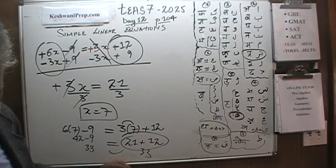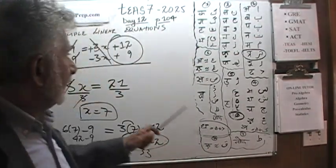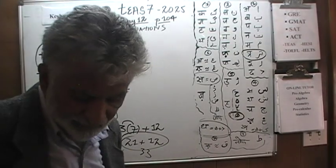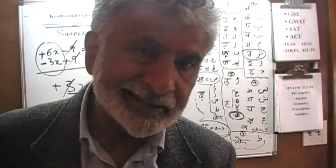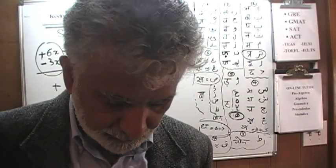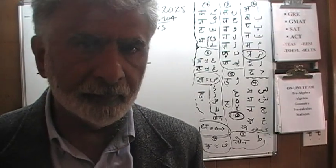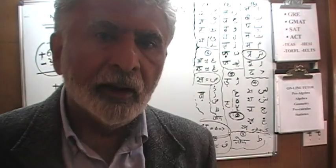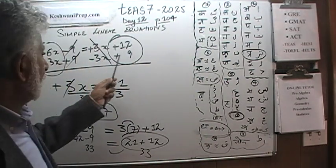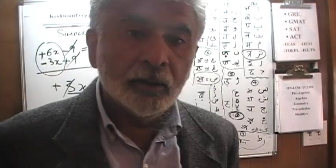That is the end of the topic: linear equations — simple linear equations. We did 5 yesterday and 5 today, and that's all you are going to see in the exam. The linear equations they ask us to solve are very straightforward and simple. Just bring all unknown quantities to the left-hand side and all known quantities to the right-hand side, and you are done. I will see you tomorrow.